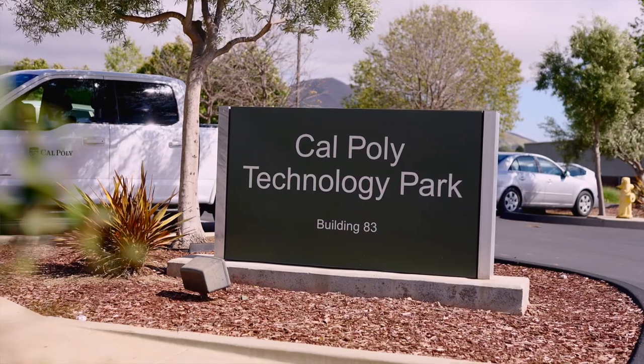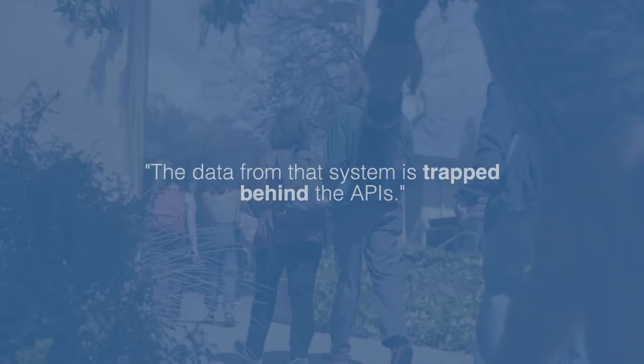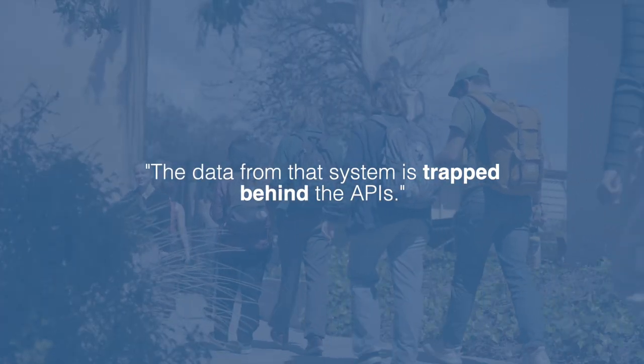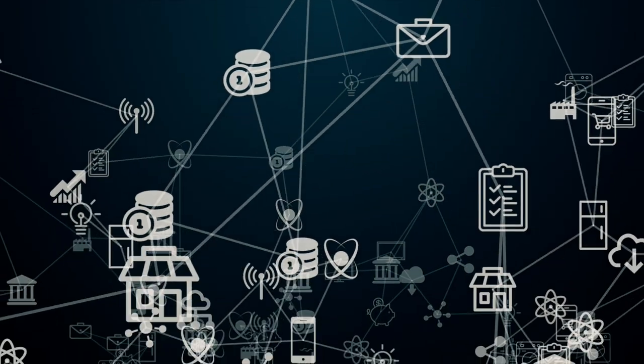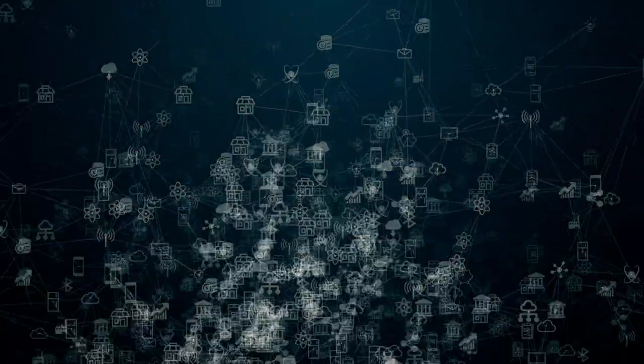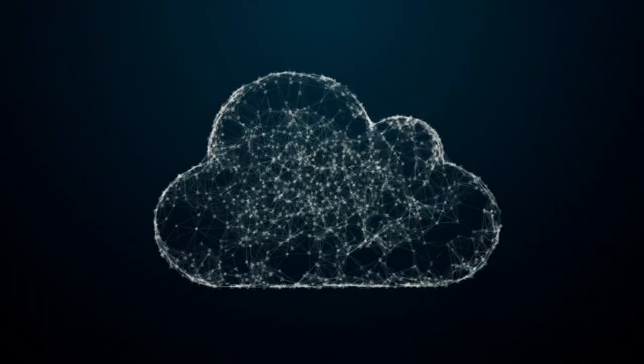One of the challenges that institutions have when using software as a service products like Canvas as a learning management system is that the data from that system is really trapped behind the APIs — the application programming interfaces — that those applications provide. These connectors allow you to free that data inside of Amazon to where you need it, whether it be an analytics area, a storage area, or an archive area. This connector helps you do that efficiently because it never leaves the Amazon environment.